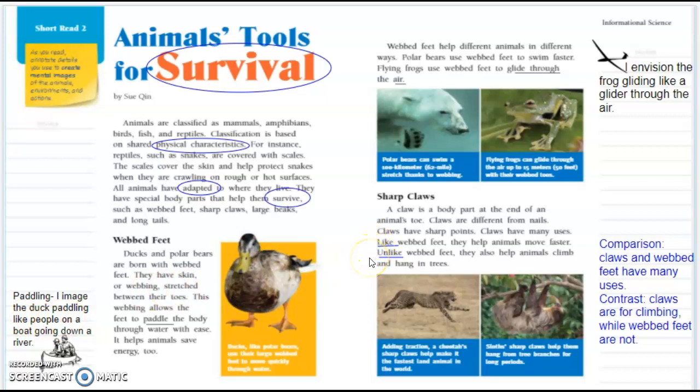And you'll notice that I underline these words like and unlike, and I wrote about it comparison. The word like means you're comparing, so claws and webbed feet have many uses. That's how they are like. Contrast: unlike claws are for climbing while webbed feet are not. You will also see this word different. I want you to tell me what that tells me.